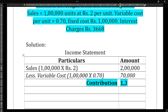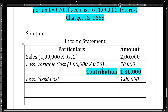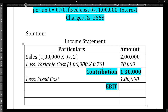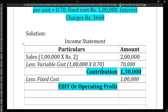The contribution is 1 lakh 30 thousand rupees. From this, we subtract the fixed cost of 1 lakh rupees, and we get the operating profit, which we call EBIT, of 30,000 rupees.